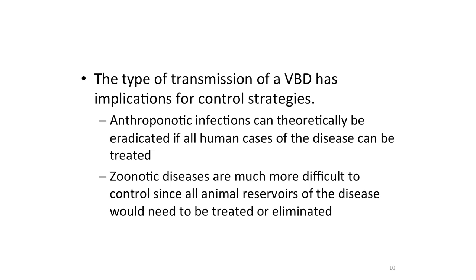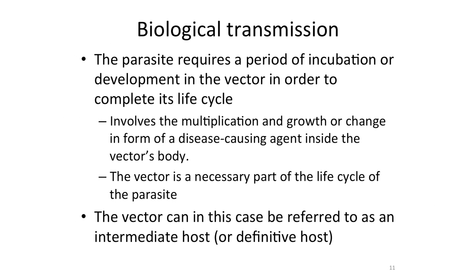Apart from anthroponotic and zoonotic, we also have different mechanisms of transmission. Biological transmission is where the parasite requires a period of development in the vector in order to complete its life cycle. This development usually involves multiplication, growth, or change in form to become infective to the next host. In this case the vector is a necessary part of the life cycle of the parasite, and the vectors can be referred to as intermediate hosts or definitive hosts, depending on the stage of the pathogen they harbor.